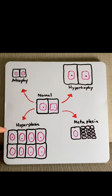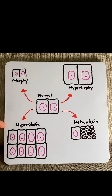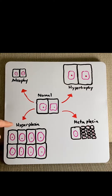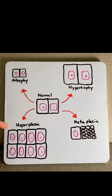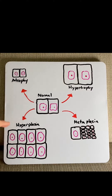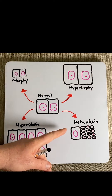Hyperplasia is an increase in cell number. A physiological example would be breast tissue in puberty or during pregnancy. A pathophysiological example of hyperplasia would be prostate tissue over high exposure to dihydrotestosterone in older men, and this would lead to benign prostatic hyperplasia.